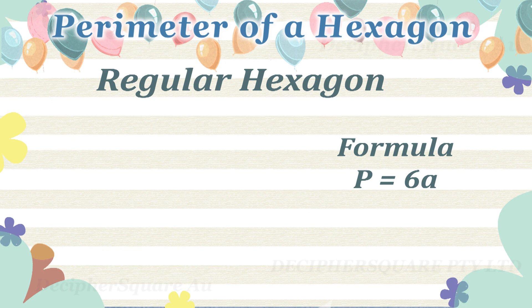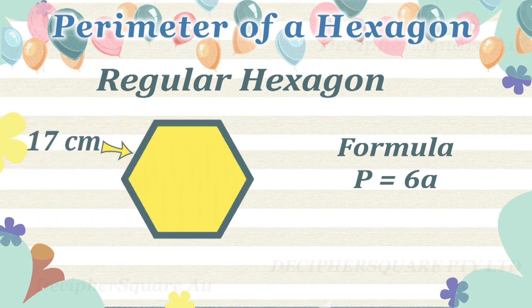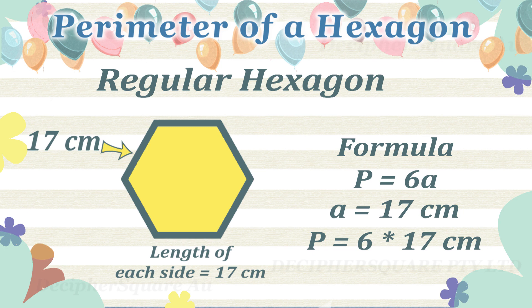Here is another example of a regular hexagon. In this example, the length of each side is 17 cm. The perimeter of this regular hexagon equals six multiplied by 17 cm, which is 102 cm.